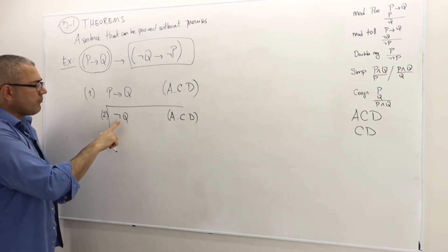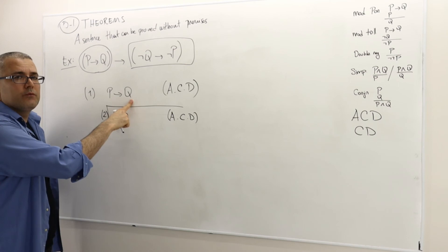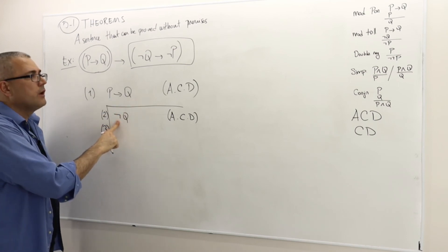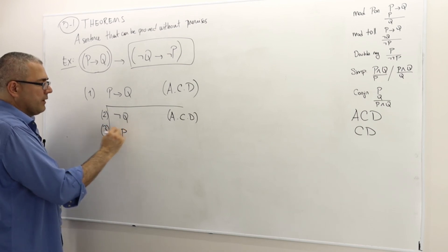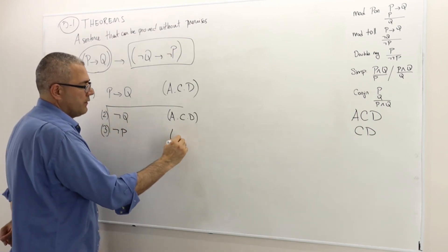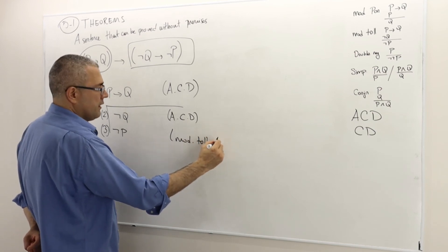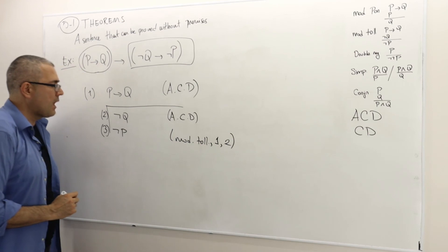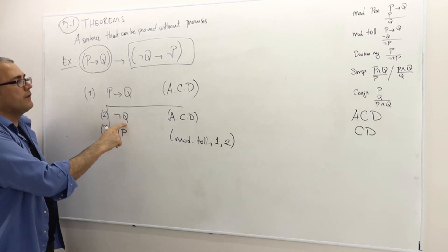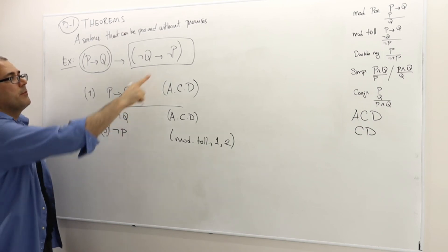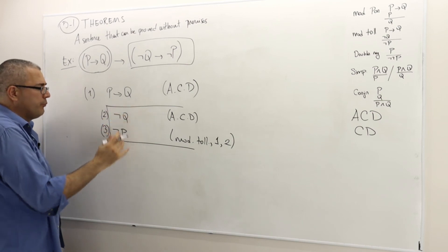So what do we have? I have P implies Q is true, and not Q is true. So I have modus tollens. Therefore, not P must be true. This is modus tollens, thanks to the arguments in line 1 and line 2. So if not Q is true, not P must be true as well. That is the end of this sub-proof.